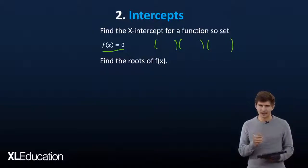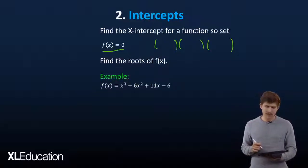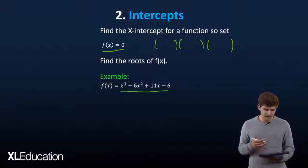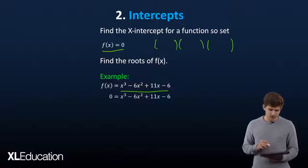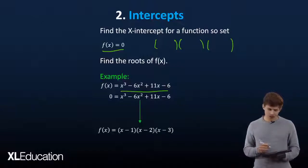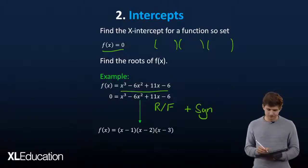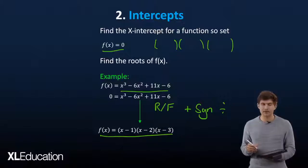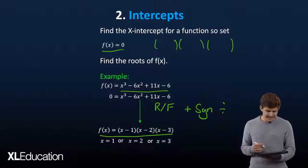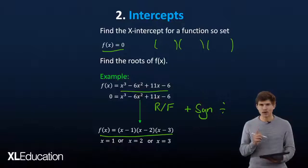Looking at the example, we have f(x) as before — and this might look familiar because it's exactly what we worked with earlier. We set it to zero, but we can see there's no way to factorize it intuitively. The remainder factor theorem plus synthetic division provides us with the factors. If you don't remember this, do a few examples before getting into it to make sure you're comfortable. Once you have that, you can easily see that your x-intercepts are at one, two, and three.